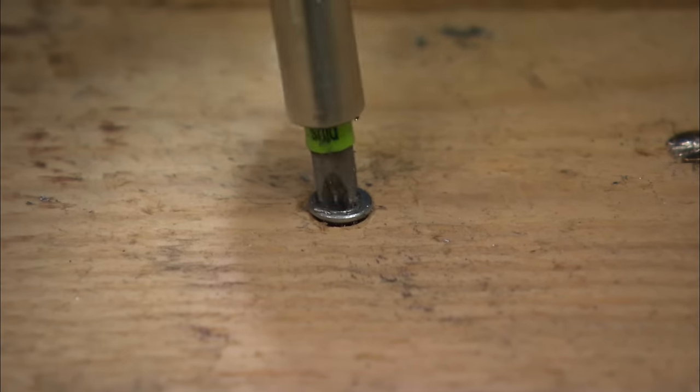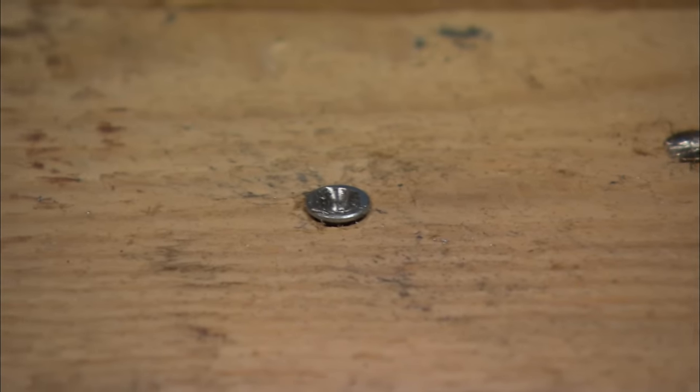Has this ever happened to you? You're trying to remove a screw but the head of the screw is stripped and the screw won't come out. Now what do you do?